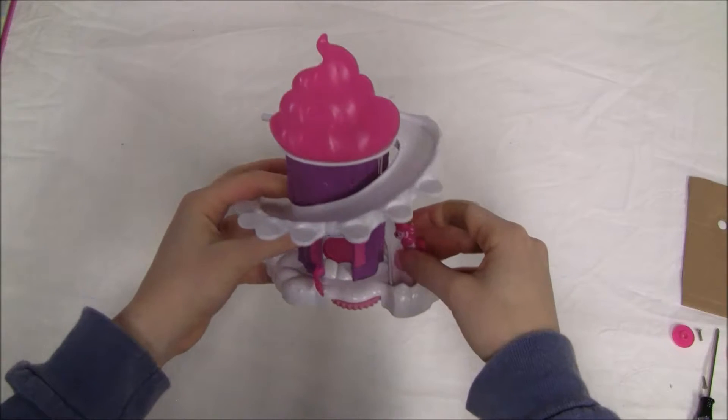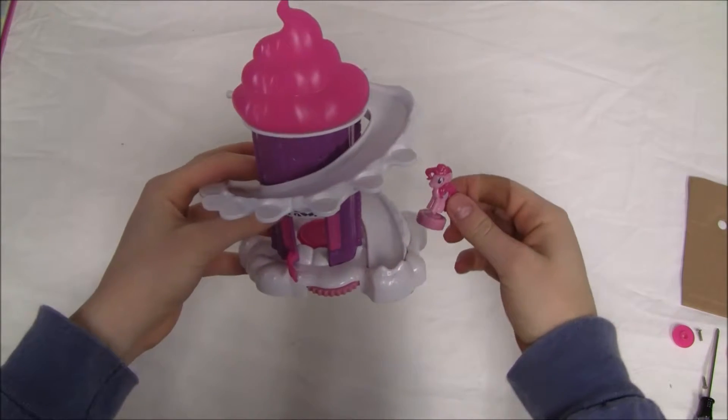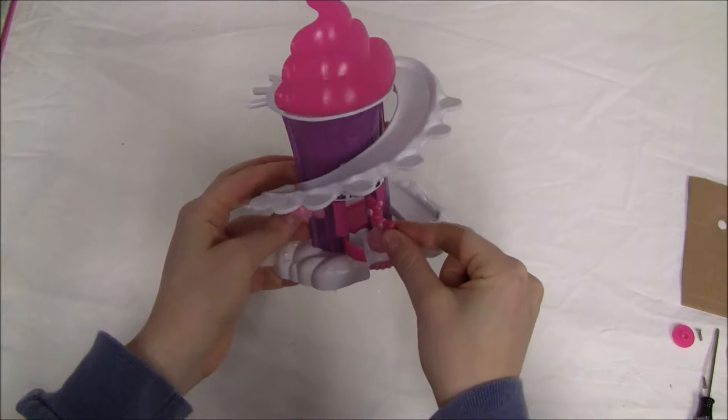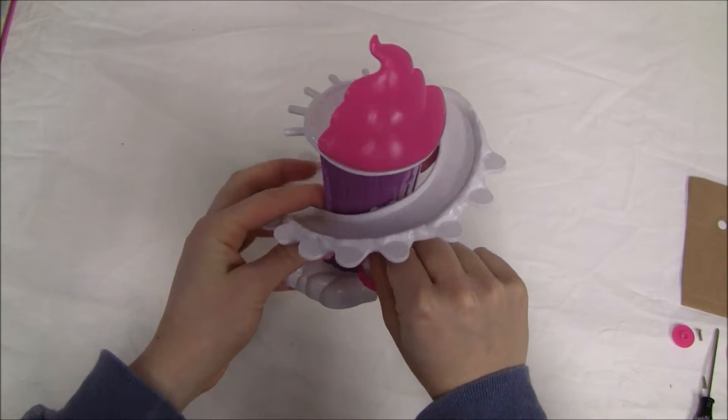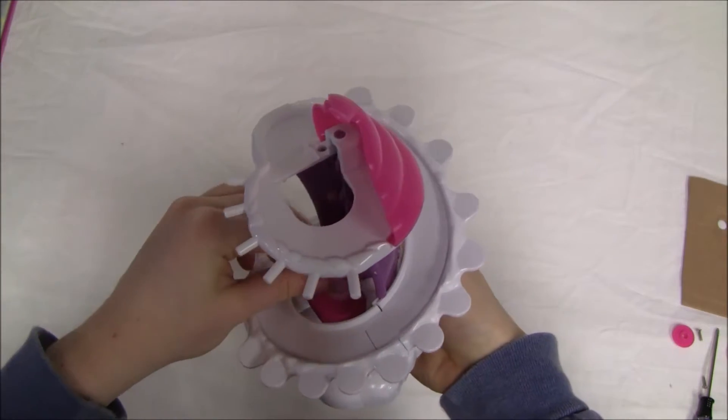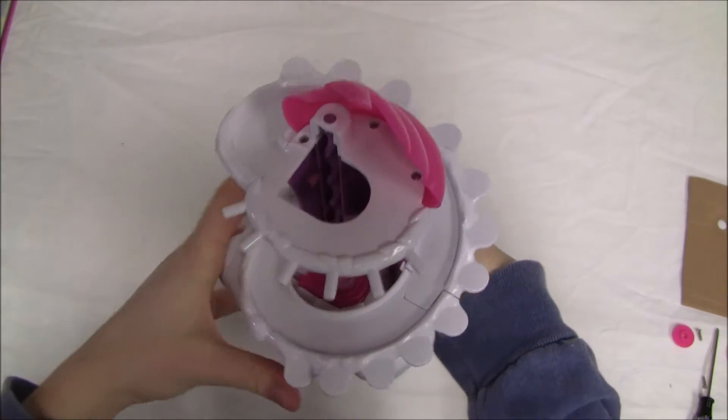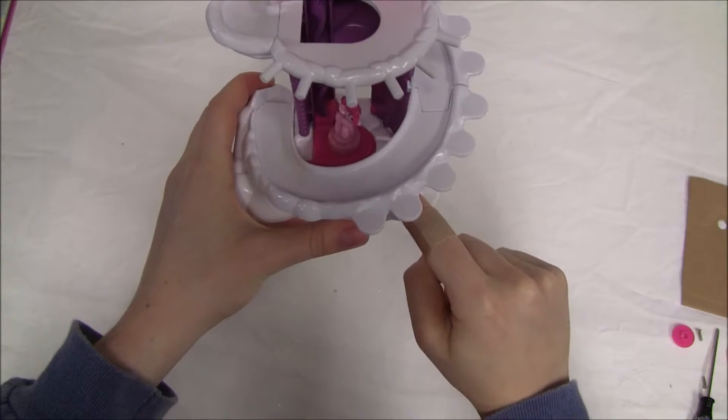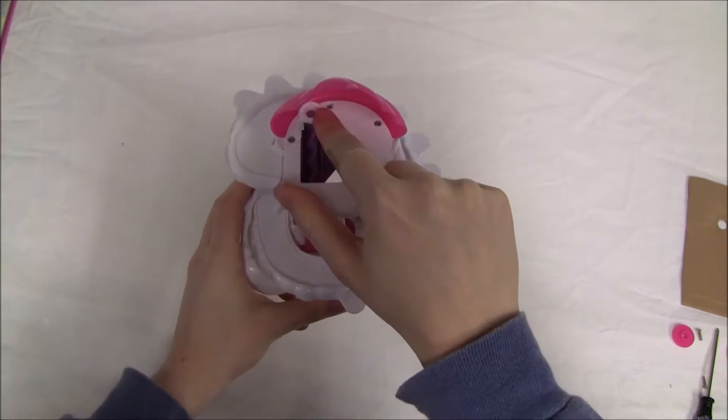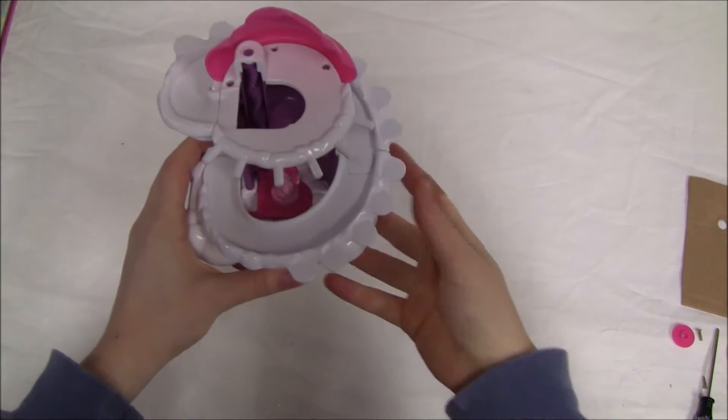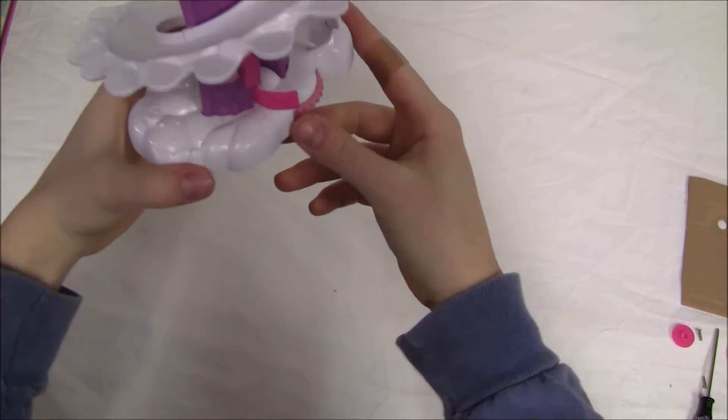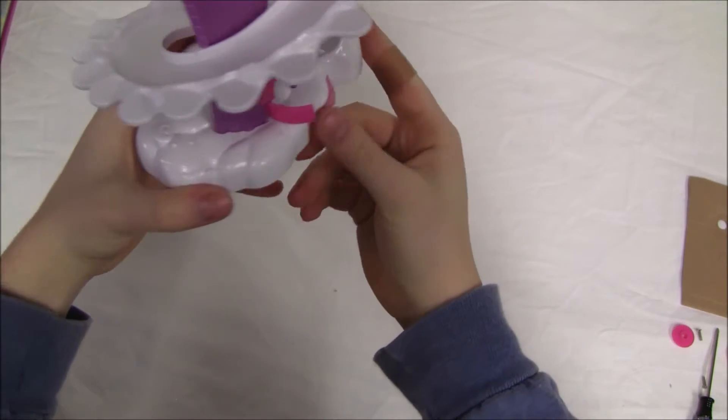This set also has a super cool elevator. So what you can do is you take your My Little Pony, you walk her through this way through the doorway and onto the elevator. So this is what the elevator looks like from this side. It's kind of a pink platform that's going to go all the way up to the top here and then she can slide down the slide. So to move the elevator up, you're going to move this dial with your finger.